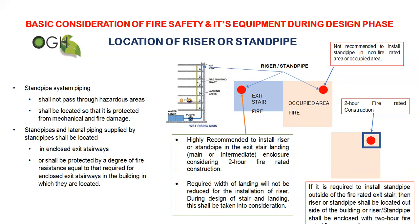The hidden point is the position of the riser in the exit stair — that is an important part. The system piping shall not pass through hazardous areas and shall be located so that it is protected from mechanical and fire damage.